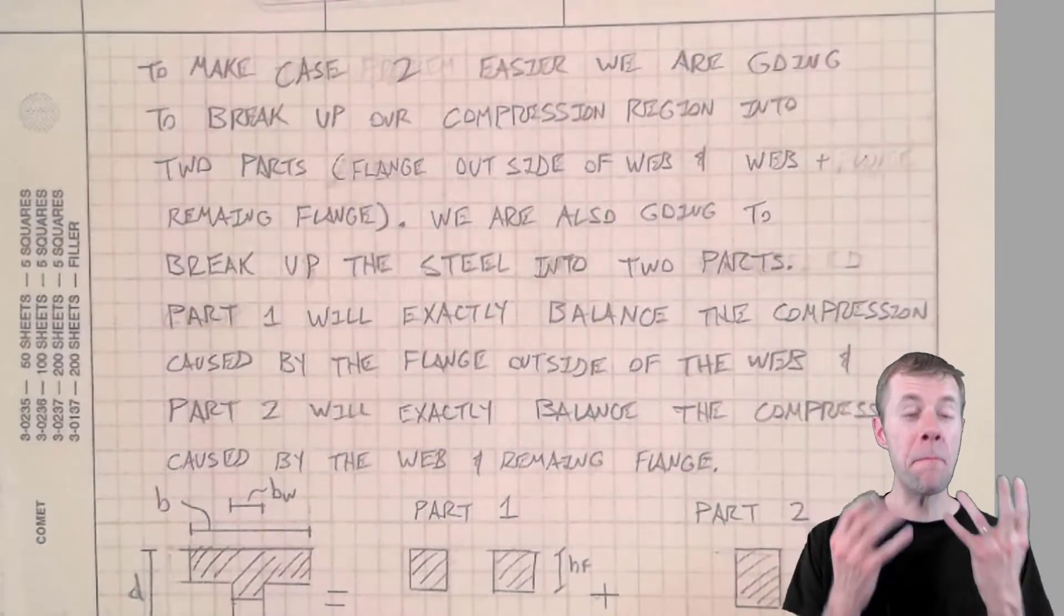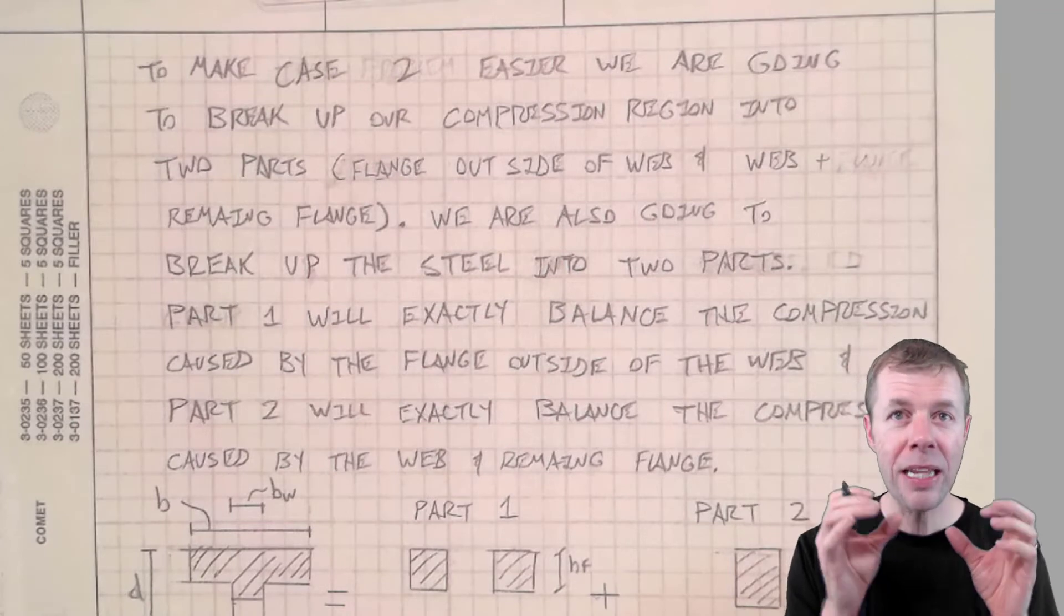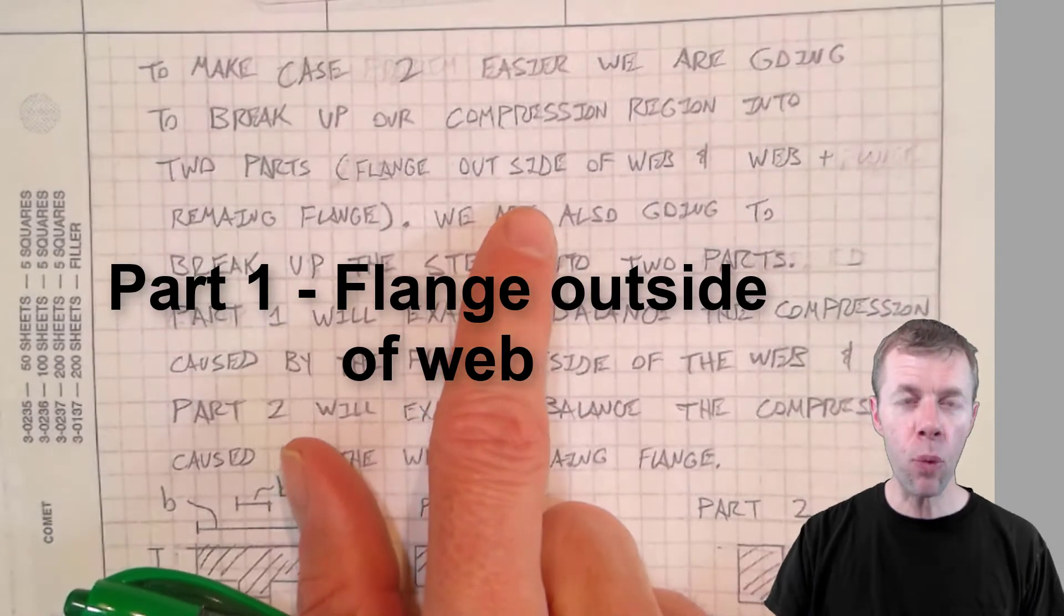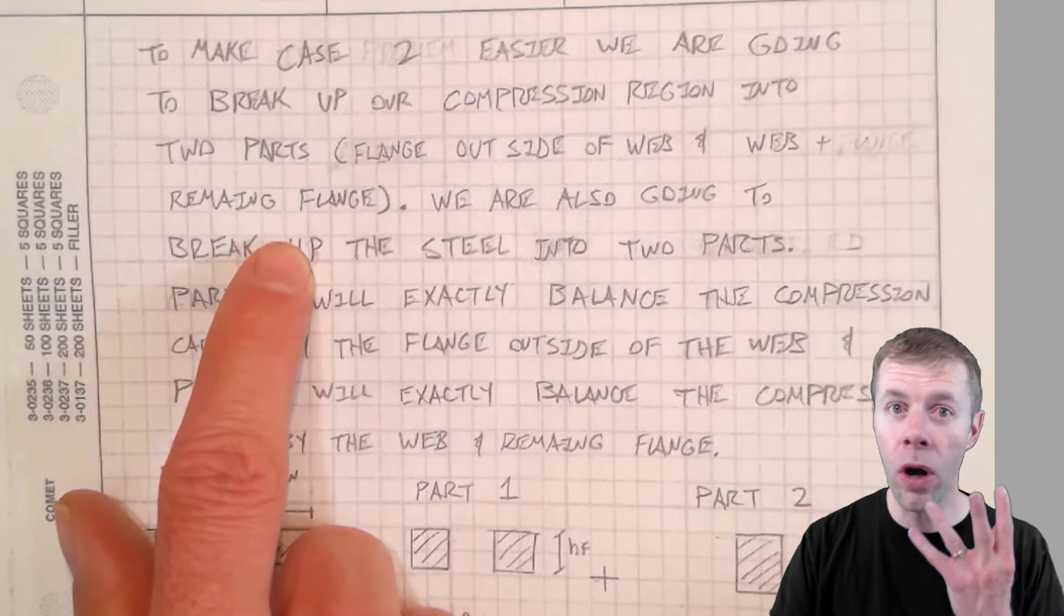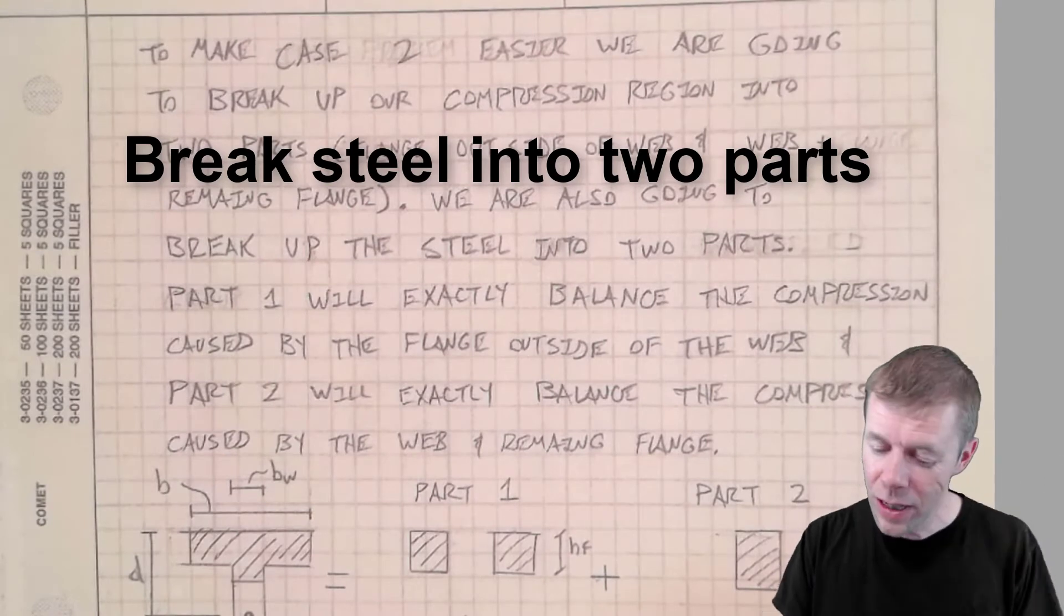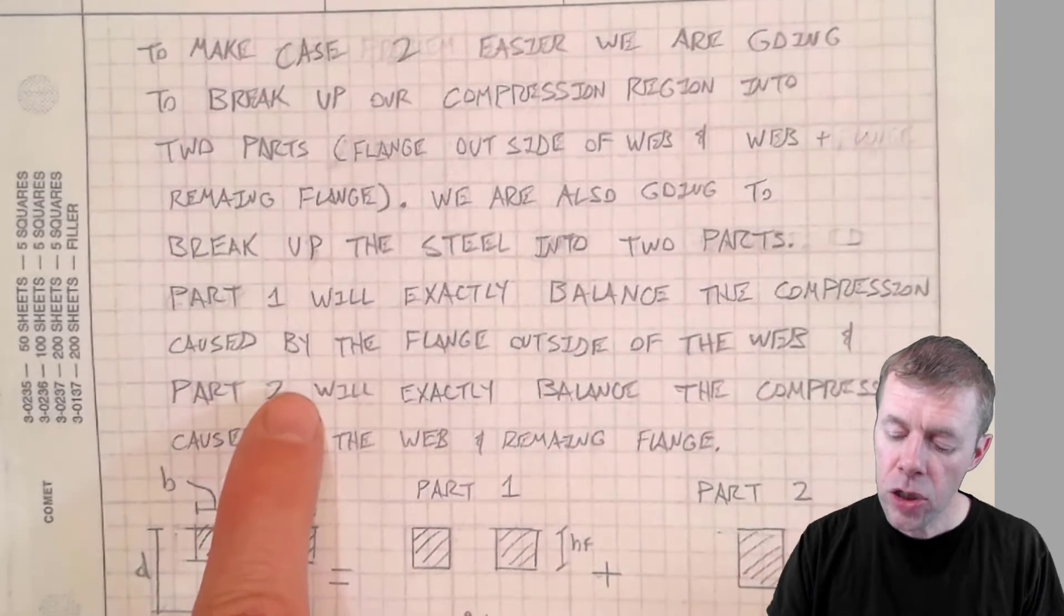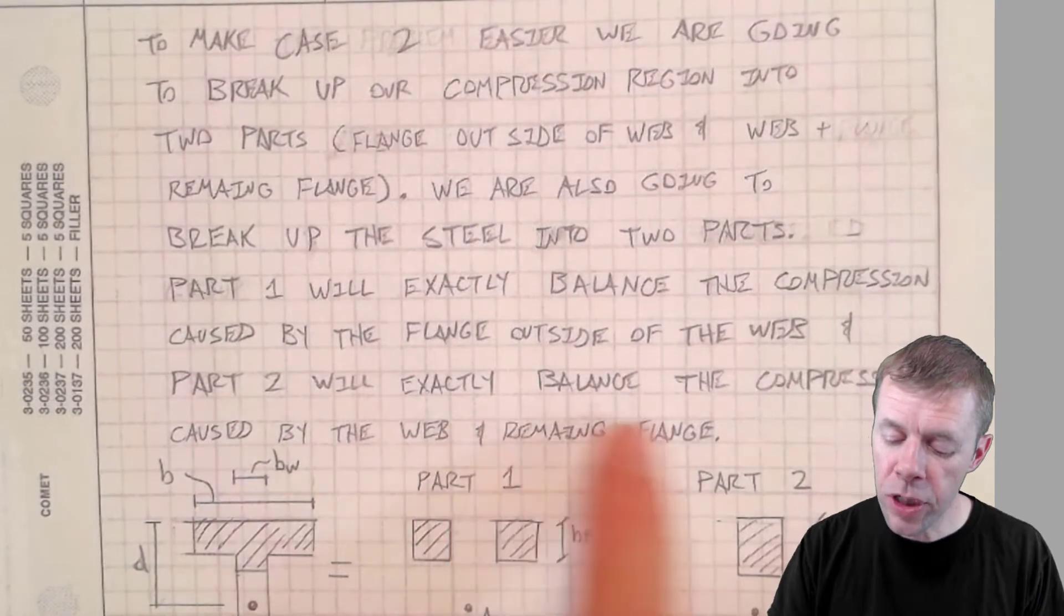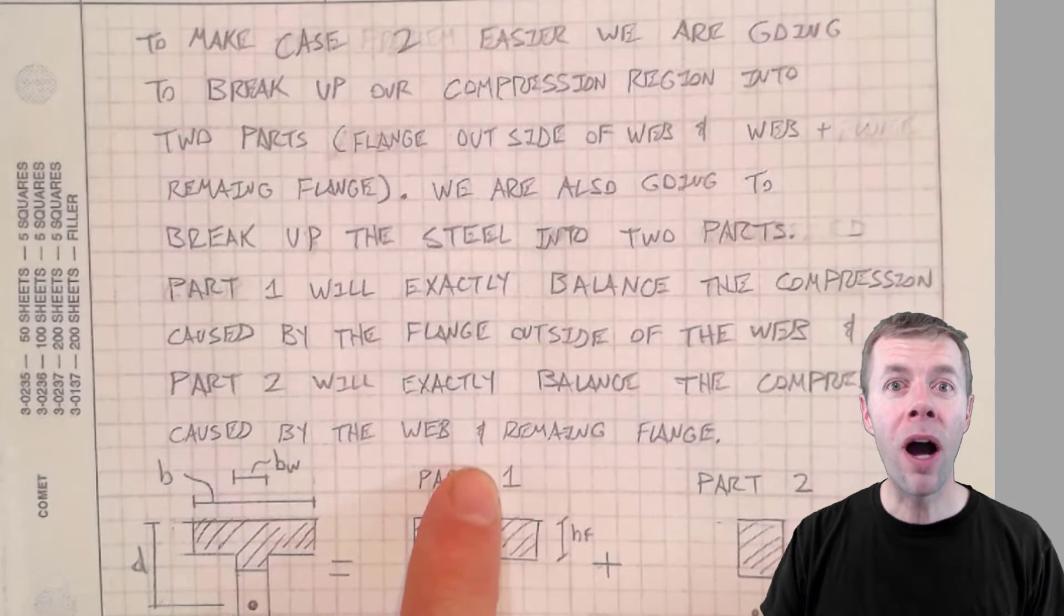So to make all this easier, to make this simpler to do, we're going to break up our compression block into two parts. One is the flange area outside of the web, and the other is the web plus the remaining amount of the flange. You're like, what? Don't worry, I'll show you coming up. We're also going to break up our steel into two parts. That's why it's part two. Part one will exactly balance the compression caused by the flange outside of the web. And part two will exactly balance the compression caused by the web and the remaining flange. Confused you yet? Keep watching. Here we go.